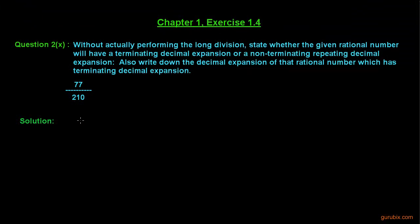Here is the last part of question number 2 of exercise 1.4 of chapter 1. This question asks us to check whether the rational number 77 over 210 has a terminating decimal expansion or a non-terminating repeating decimal expansion. It also asks us to write the decimal expansion of this number if it has a terminating decimal expansion.